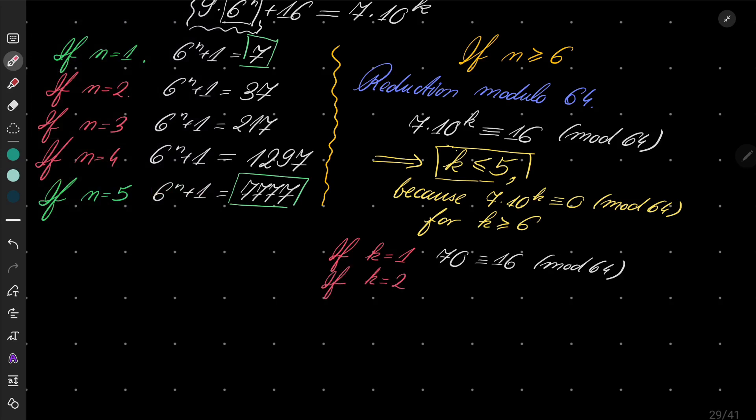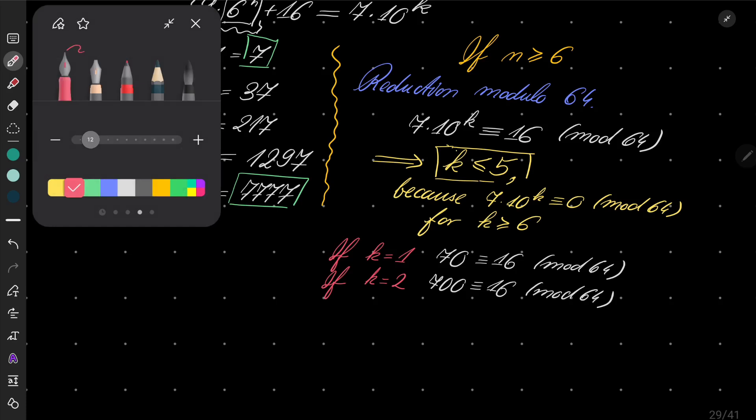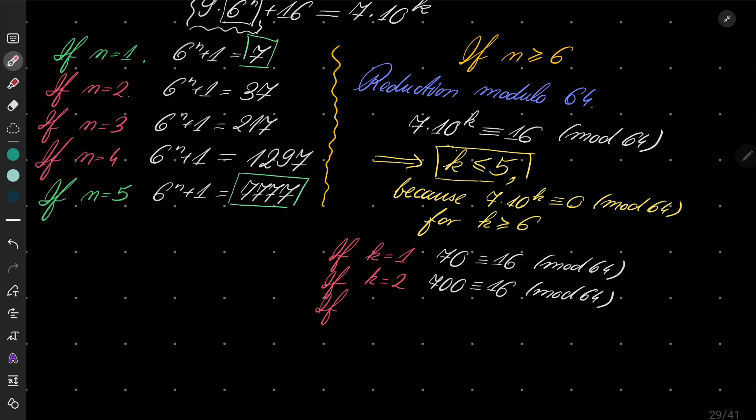If k equals 2, then 700 should be congruent to 16, which is also false. You can verify it by hand easily.